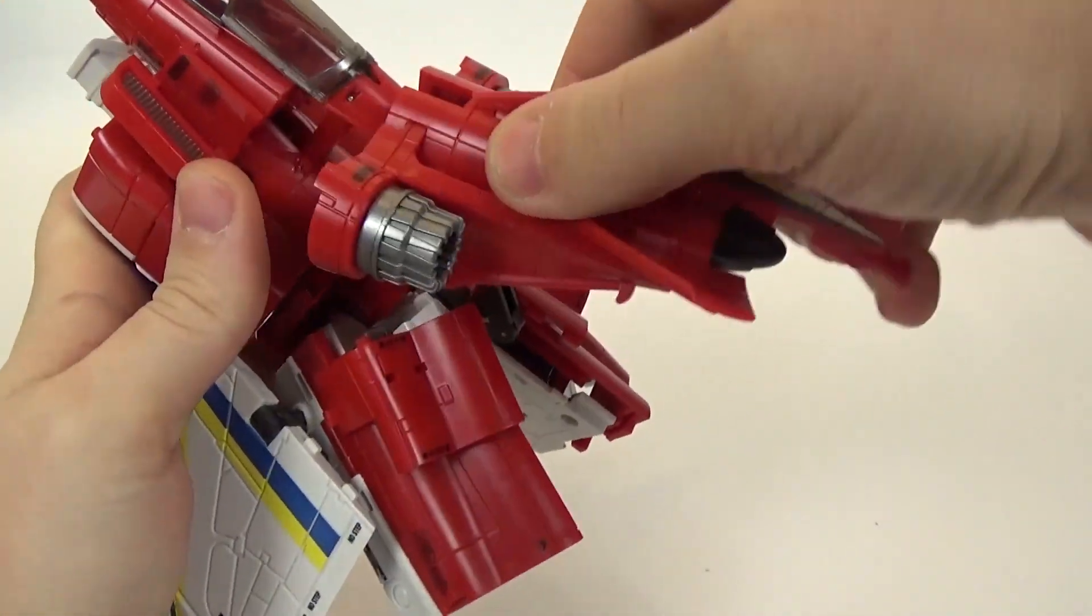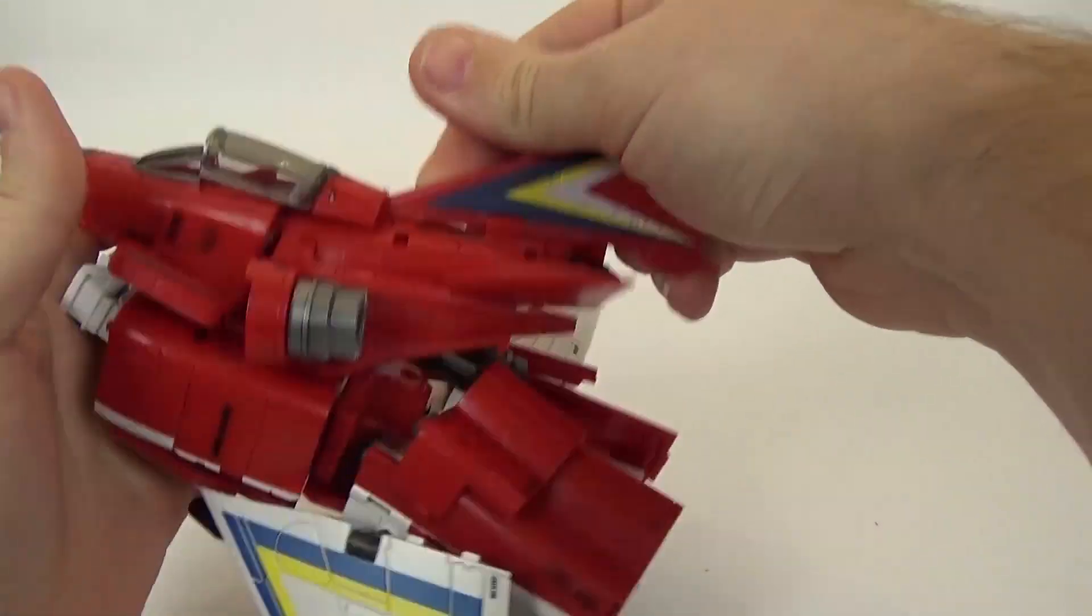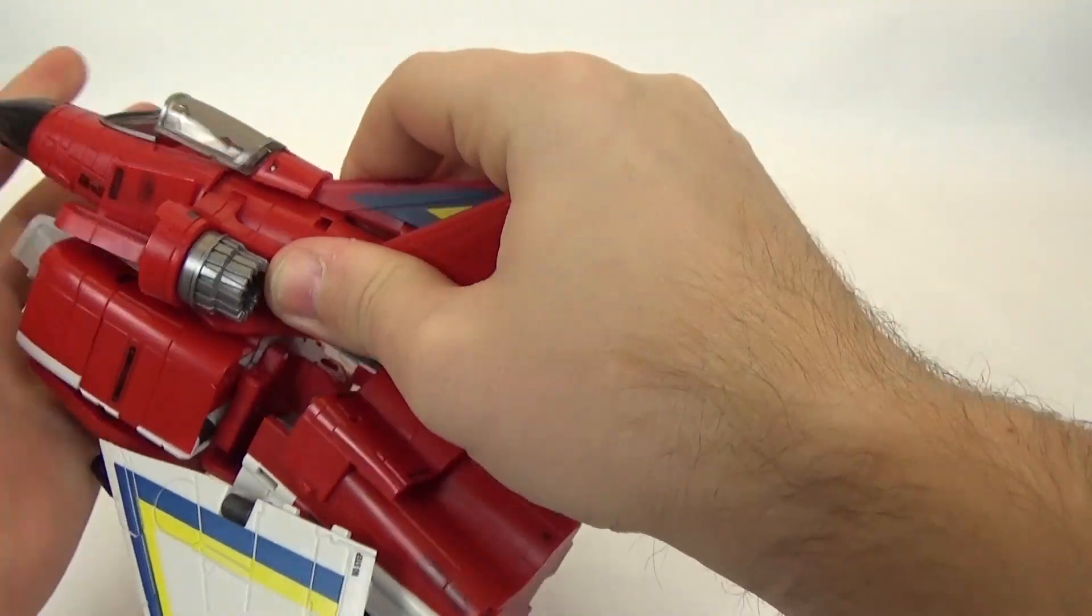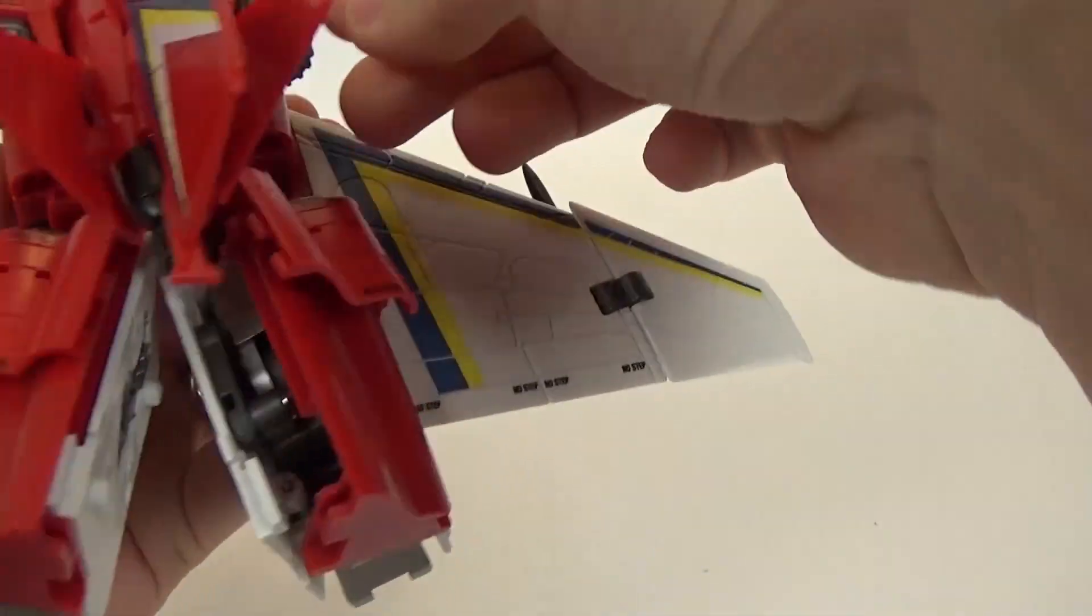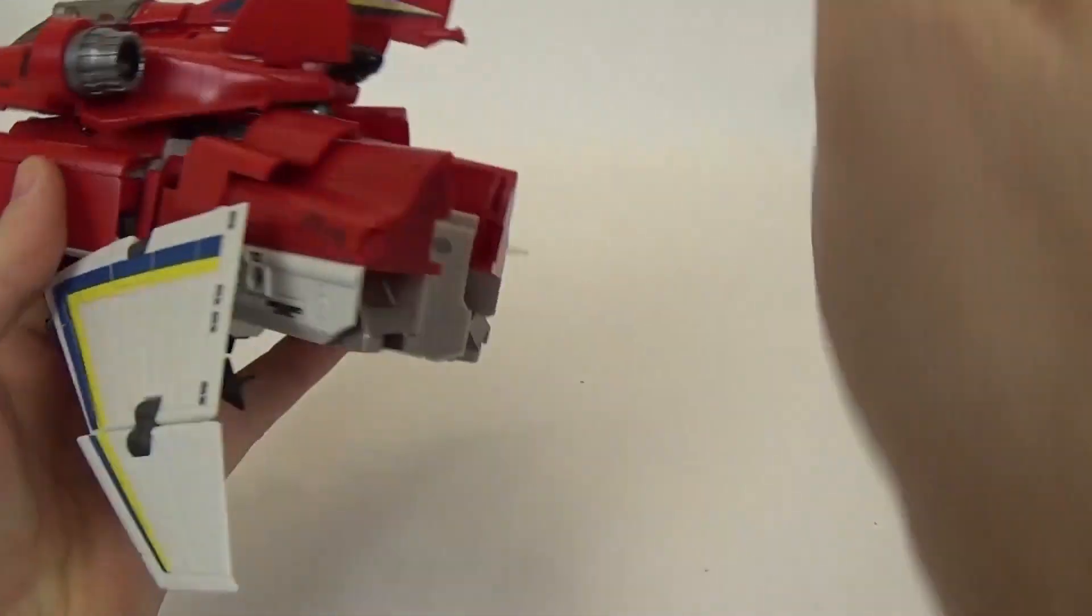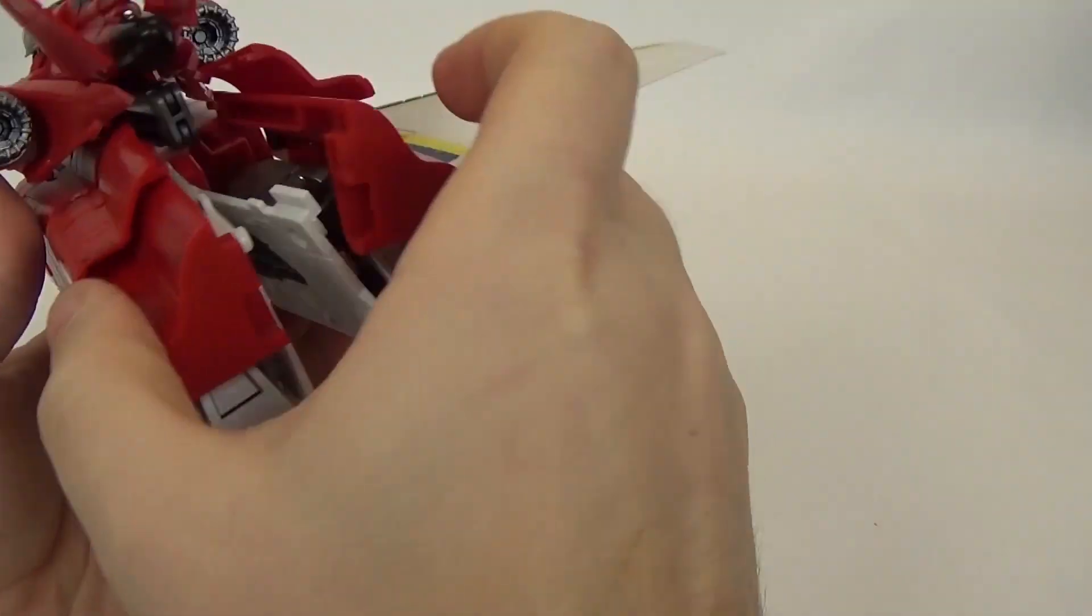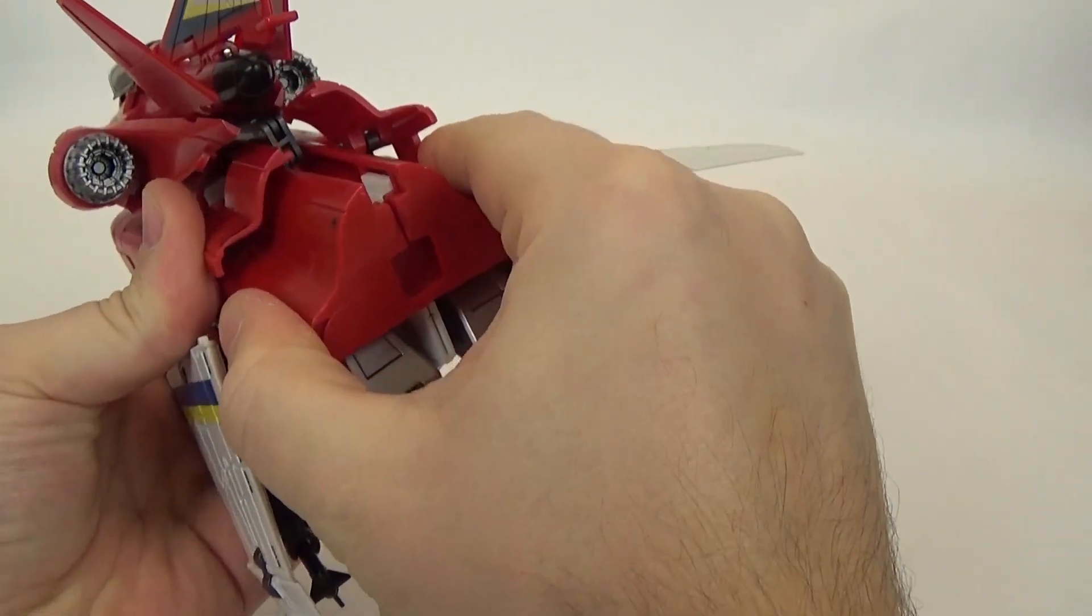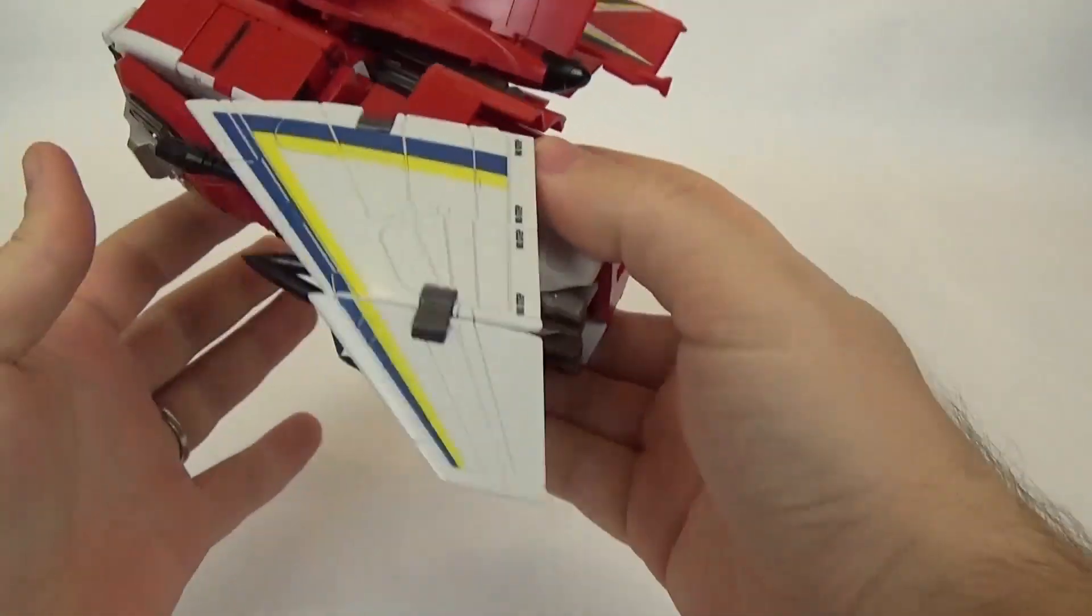And, then pull this fin back. And, we'll just split the legs just for now. Just to be able to angle this up and in. And, then close that up. And, there you have his backpack. Pretty much ready for Roboto or arm mode.